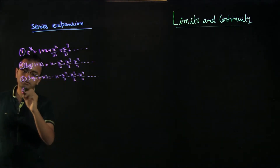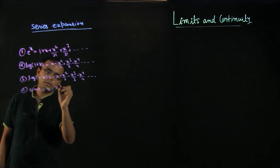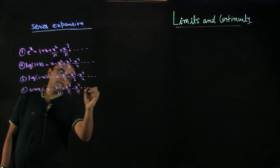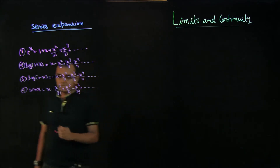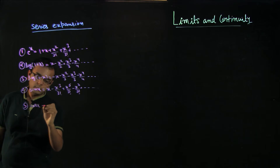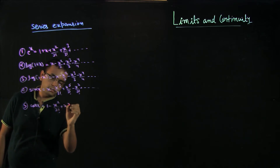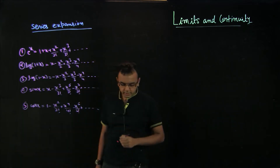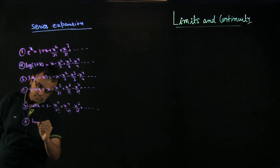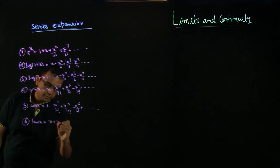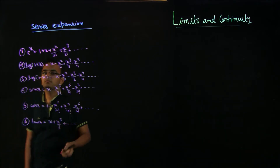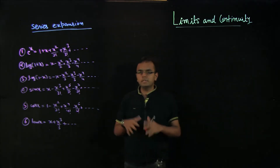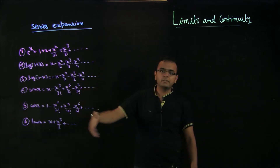Sin x is given by x minus x³ by 3 factorial plus x⁵ by 5 factorial minus x⁷ by 7 factorial and so on. Cos x is given by 1 minus x² by 2 factorial plus x⁴ by 4 factorial minus x⁶ by 6 factorial and so on. Lastly, tan x is given by x plus x³ by 3 and so on. These formulas allow you to expand exponential, logarithmic, sin x, and cos x in terms of powers of x.